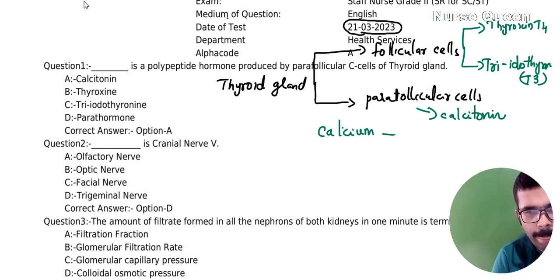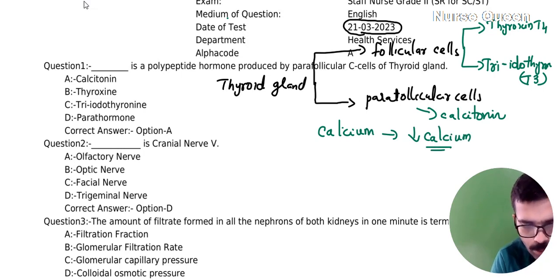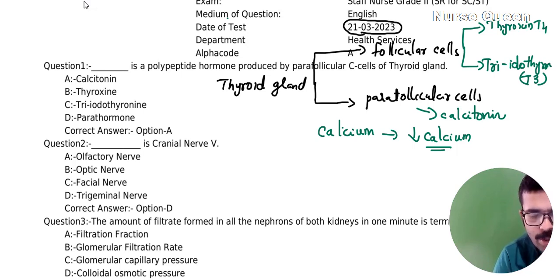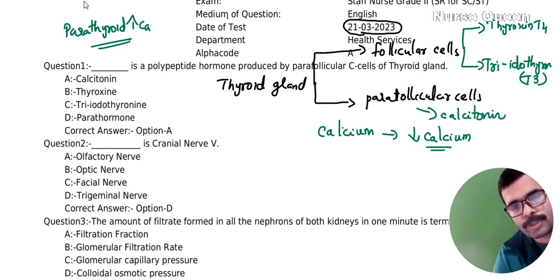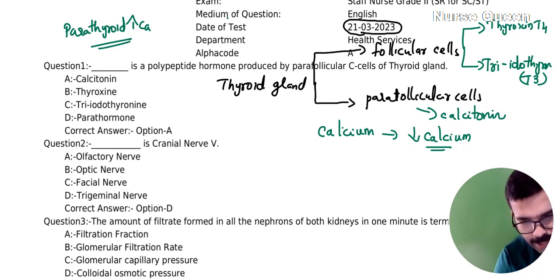Calcitonin is a hormone that helps to regulate calcium levels in the blood. Calcitonin has the opposite action of the parathyroid hormone. Parathyroid hormone increases the calcium level, while calcitonin decreases the calcium level.